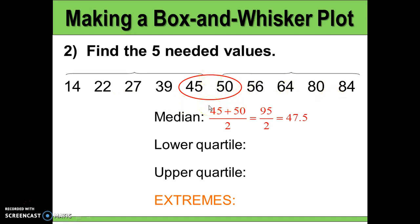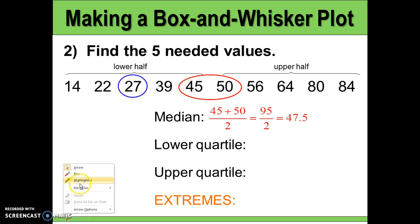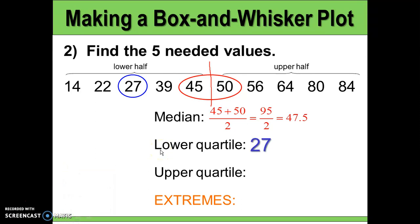By finding the median, we cut the data into two halves: the lower half from 45 down and the upper half from 50 up. To get the quartiles, we find the median of each half. The lower quartile is 27 and the upper quartile is 64. Then we identify the two extremes — the smallest and largest values. The lower extreme is 14 and the upper extreme is 84.